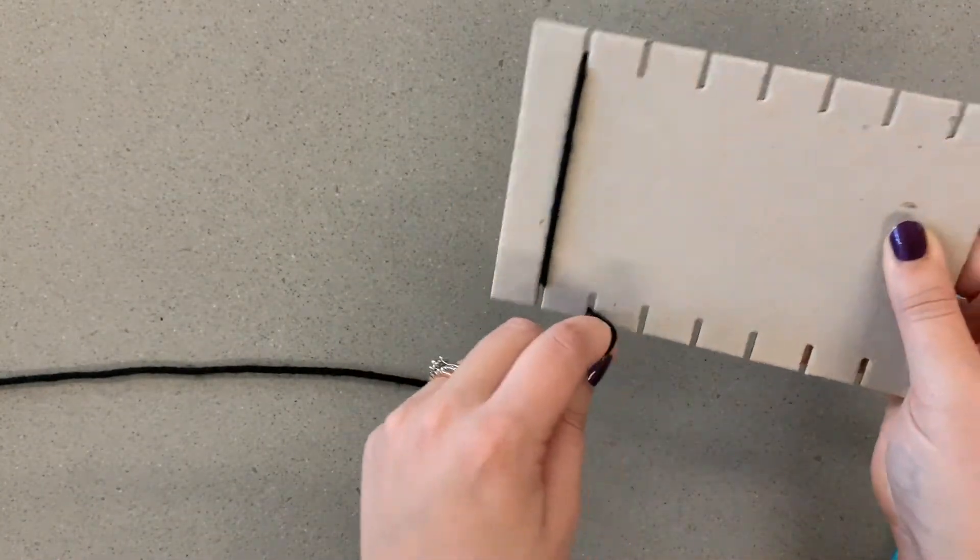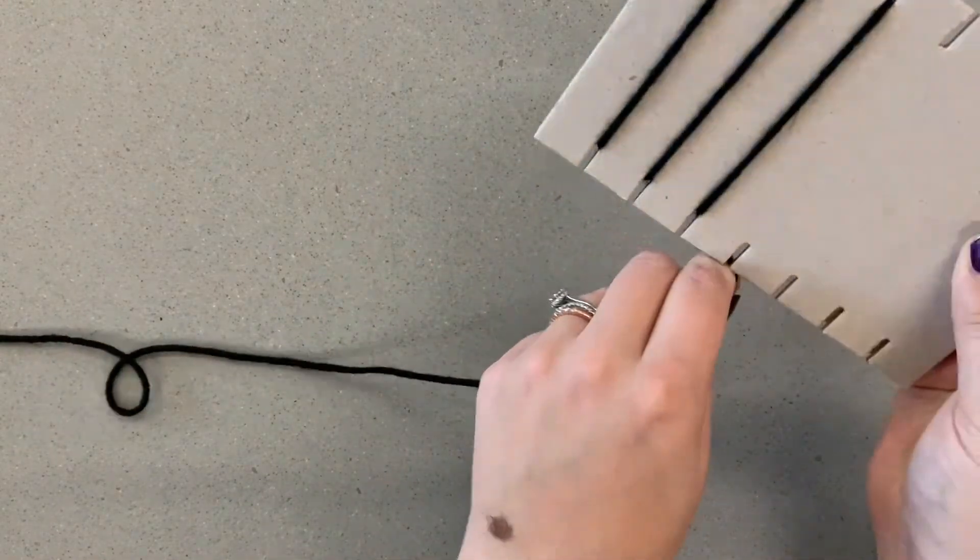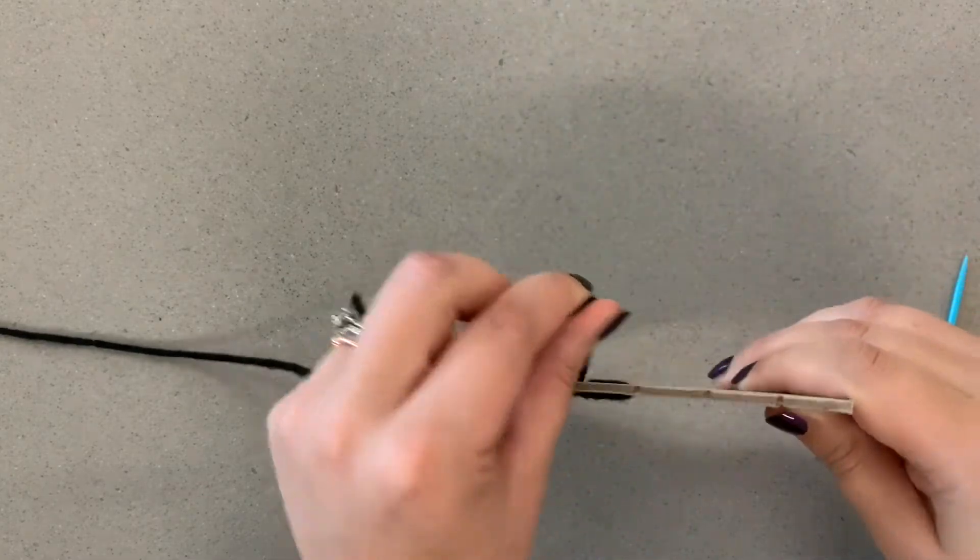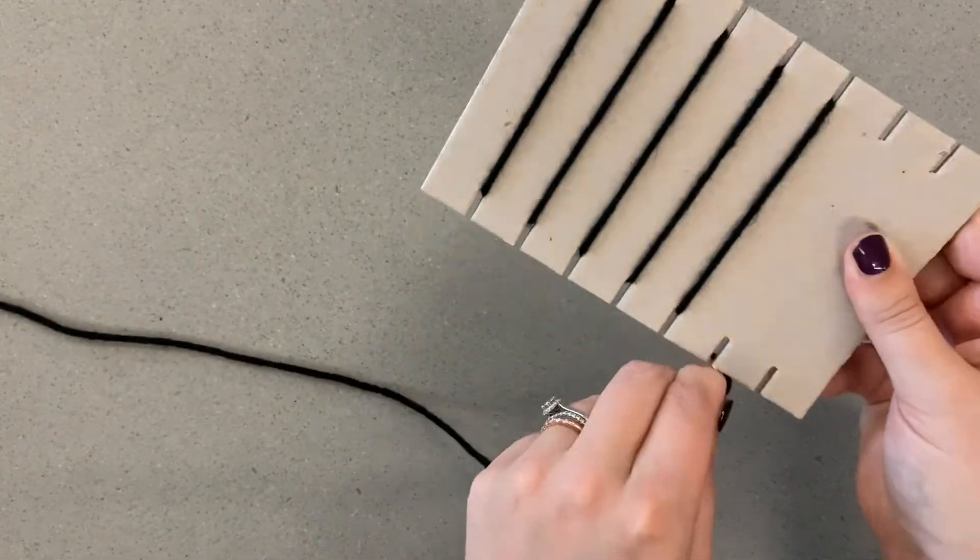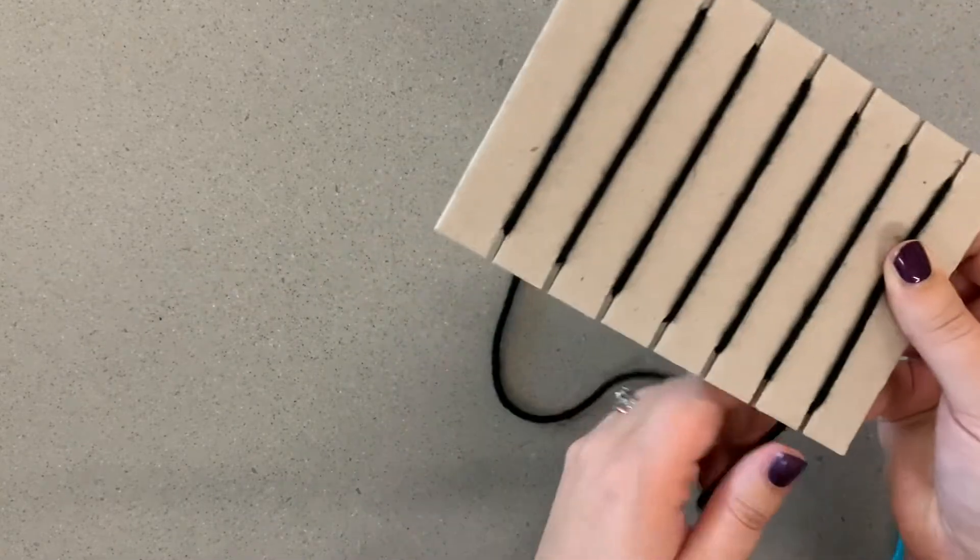So now that that's stuck in there, you're going to take your string down and go around the loop and then up and around the loop. And notice how I didn't wind it around the back side of my loom, that is not what you want to do or you won't be able to take this weaving off when you are finished.